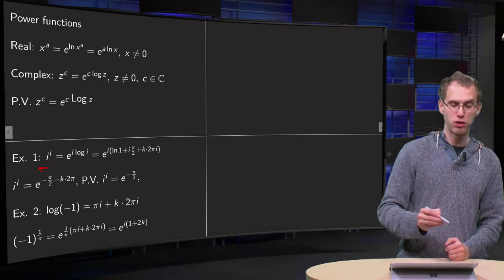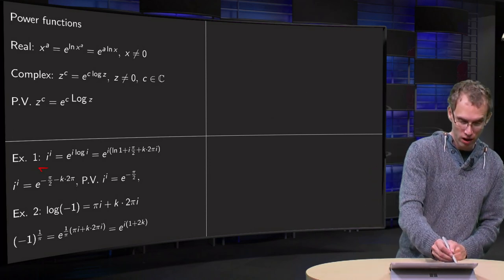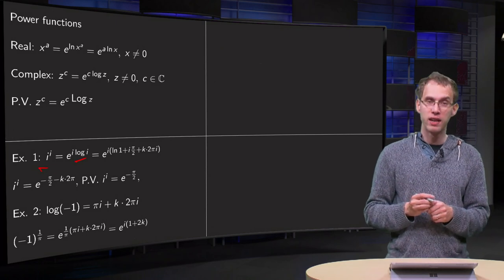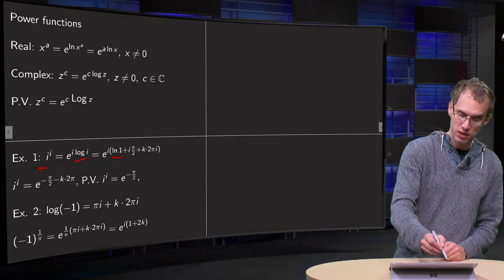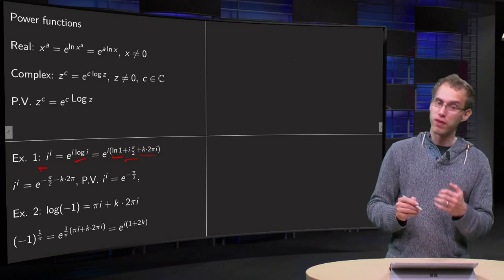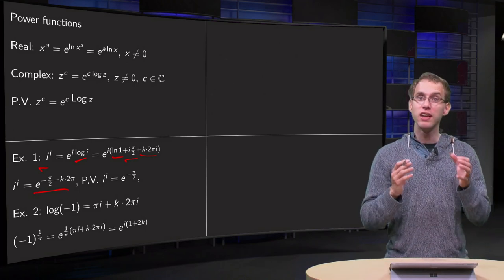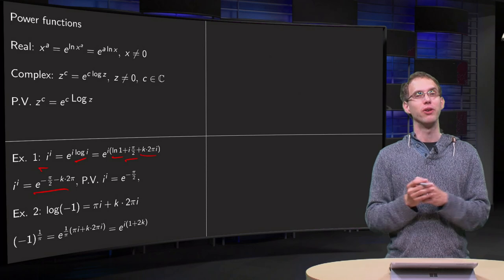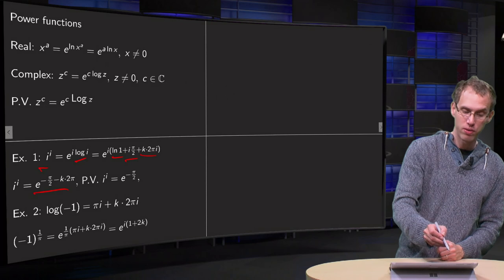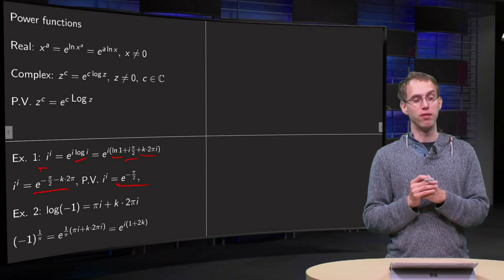Let us do some computations. We can start with computing i to the power i — that's by definition e to the power i times log i, this is a small log. We know how to compute the log of i: that equals the ln of the modulus plus i times the argument plus k times 2π. Simplifying, we get e to the power minus π over 2 minus k times 2π. So we see that i to the power i becomes a real number. If we take the principal value, which means taking k equals zero, we get e to the power minus π over 2.